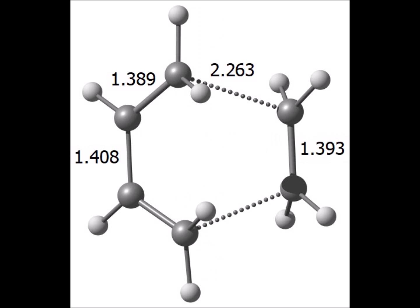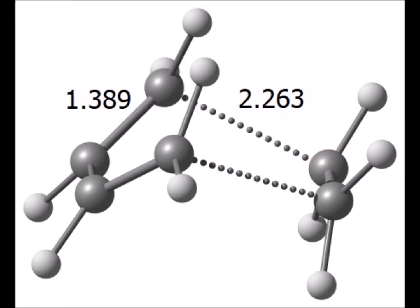Here is the computed transition state for the Diels-Alder addition of 1,3-butadiene to ethylene in a top-down view. The incipient sigma bonds are shown as dashes in this view. Here is another view of the computed transition state structure for the addition of 1,3-butadiene to ethylene.